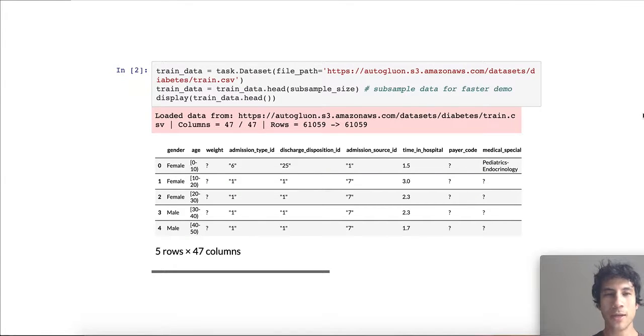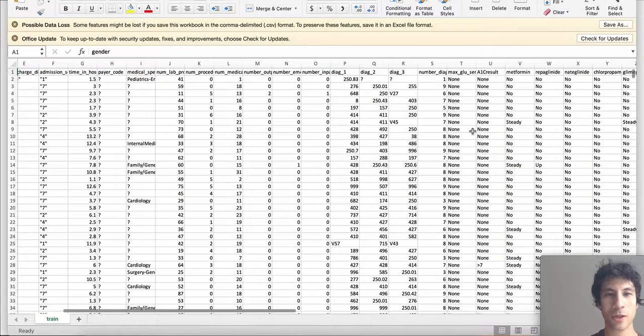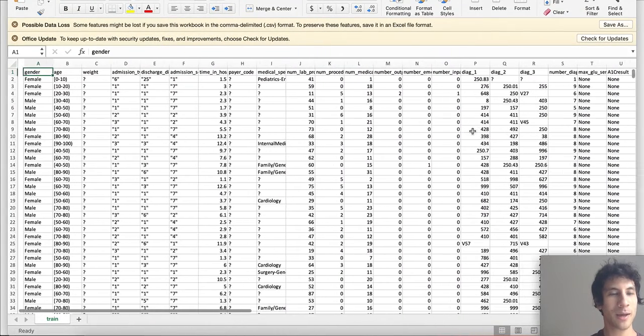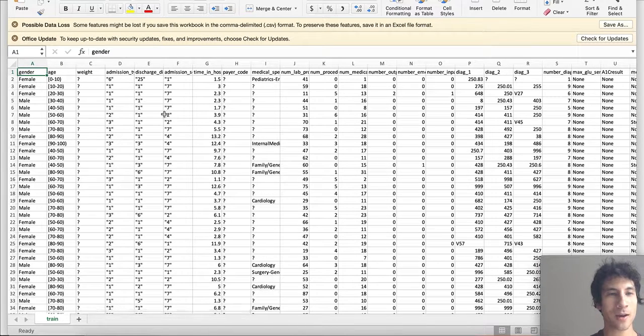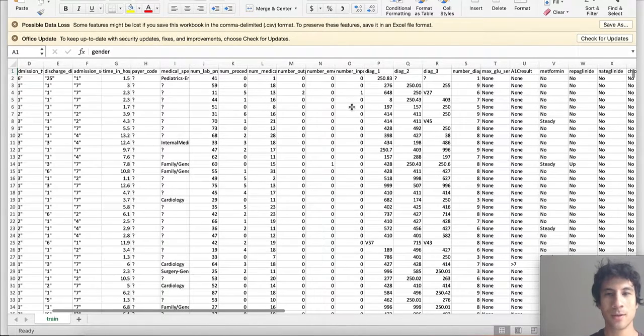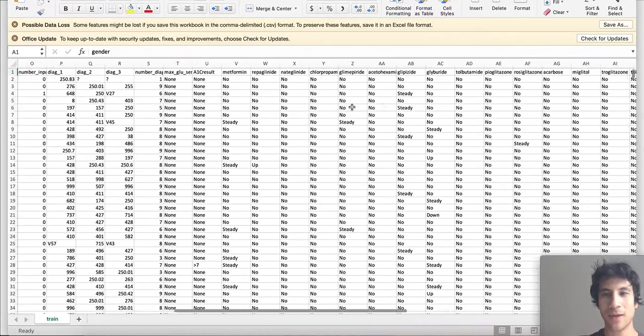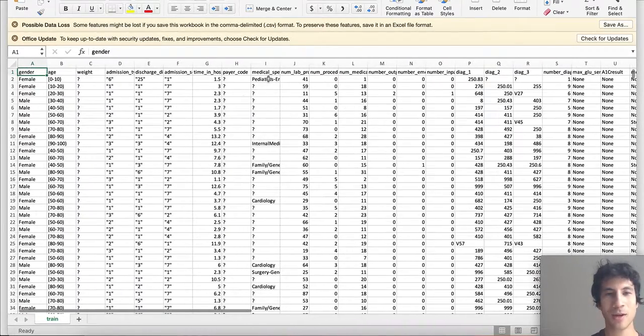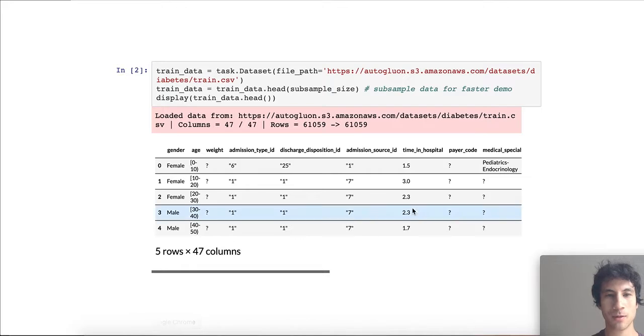Now let's load the data. Here we specify that the data lives at this path, which actually in this case is a cloud storage bucket in S3. However, this could just be a local CSV file on your own computer. For example, here's what the CSV file actually looks like. Here we have various columns, various rows representing patients, and we see that the CSV data is pretty messy containing strings, numbers, missing values, etc. It's not really suited for most machine learning models.